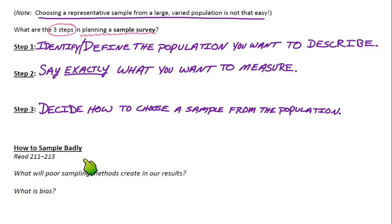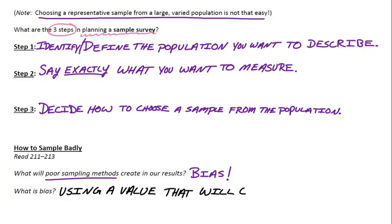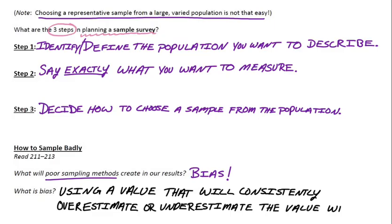And so the next part here talks about what not to do, how to sample badly. The first question there, what will poor sampling methods create in our results? And we're not talking about bias like you favor one person over another person. We're talking about the statistical definition. So what's the statistical definition of bias? That means we're using a value that will consistently overestimate or underestimate the value we want to measure or know about. So just to be clear, that's the statistical definition of bias. Something that consistently overestimates or underestimates the value we're interested in knowing about.